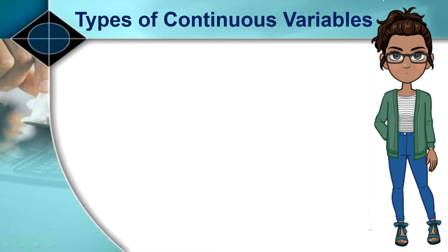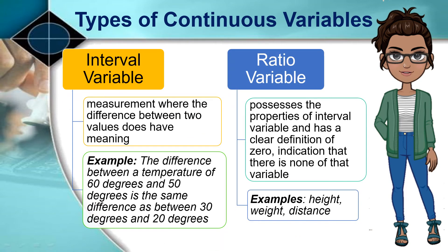Continuous variables can be further categorized as either interval or ratio variables. An interval variable is a measurement where the difference between two values has meaning. For example, the difference between 60 degrees and 50 degrees is the same as between 30 degrees and 20 degrees. A ratio variable possesses the properties of an interval variable and has a clear definition of zero, indicating that there is none of that variable. Examples of ratio variables include height, weight, and distance. However, temperature measured in degrees Celsius or Fahrenheit is not a ratio variable because zero does not mean no temperature at all.